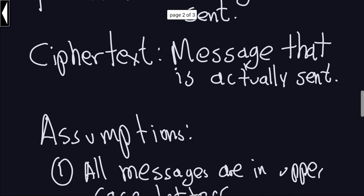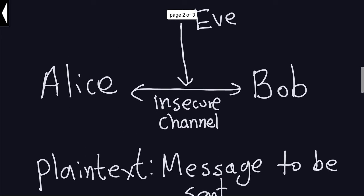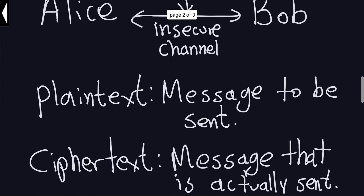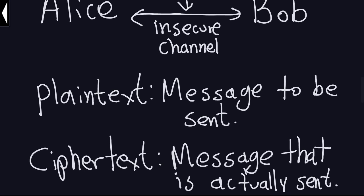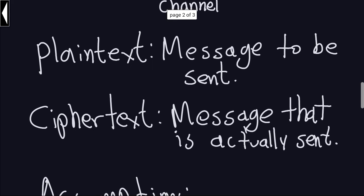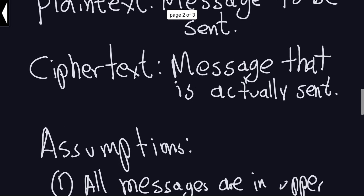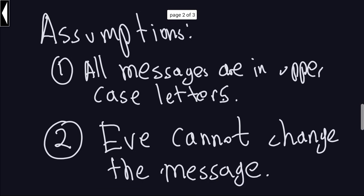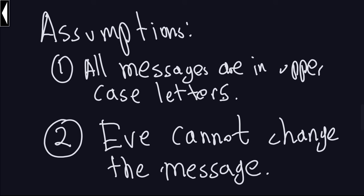Let's recall again what we just covered. We have two people, Alice and Bob, who want to communicate through an unsecured channel. Eve is always listening but cannot change the messages. The plain text is the message that you want to send — that is not the message that is actually sent. The message that is actually sent is the ciphertext, which is a scrambled version of the plaintext. The assumption is that all messages are in uppercase letters from the English alphabet, and that Eve cannot change or edit those messages.